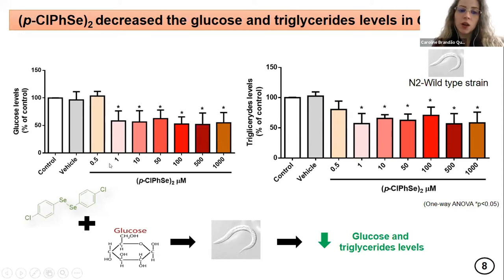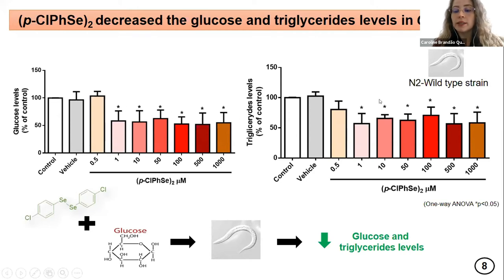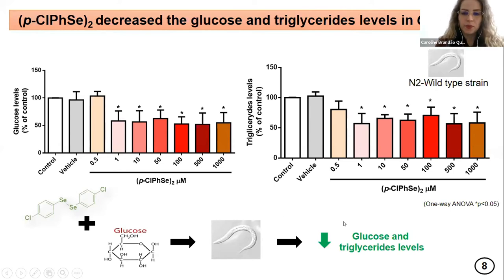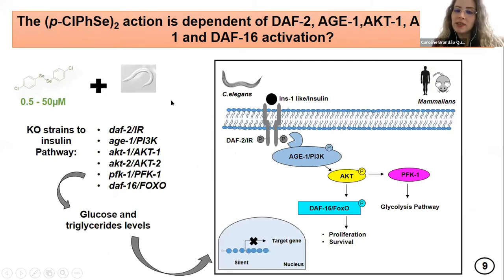Starting at a concentration of 1 micromolar, these compounds were able to reduce glucose levels and also triglyceride levels. We then investigated whether these compounds could protect against or decrease glucose and triglyceride levels after a high dose of glucose, and these compounds were indeed able to decrease glucose and triglyceride levels in C. elegans. We then decided to investigate how these compounds decrease glucose and triglyceride levels in C. elegans.